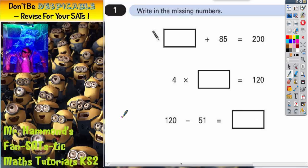So let's do that one first. 120 take away 51, just a quick subtraction column method. Don't try and do it in your head. 0 take away 1, you can't do, so you borrow 1. That becomes 1, that becomes 10. 10 take away 1 is 9.